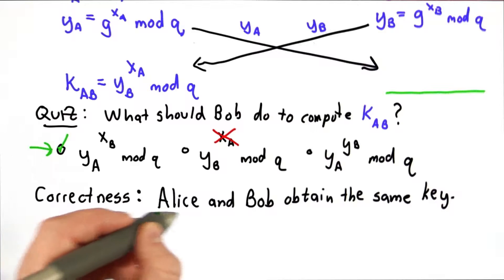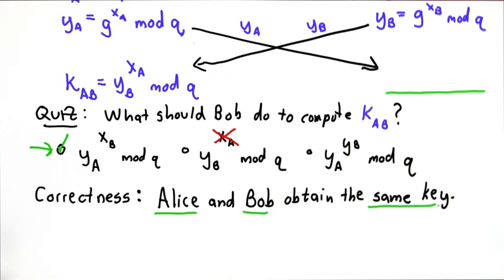So the correctness property is that Alice and Bob obtain the same key. And we can show this by just plugging in the values.